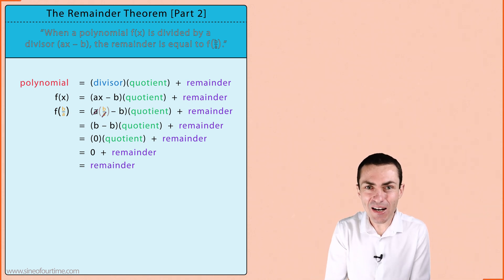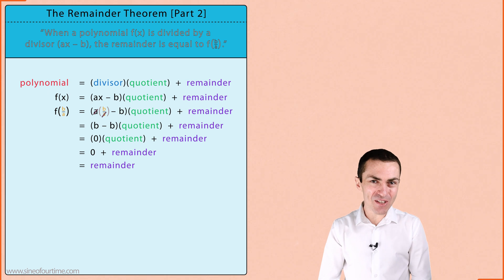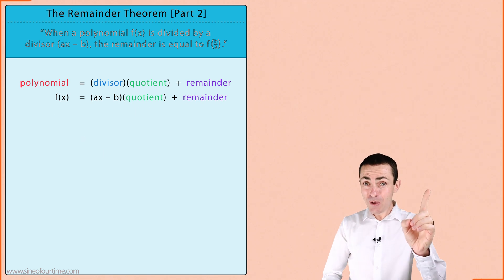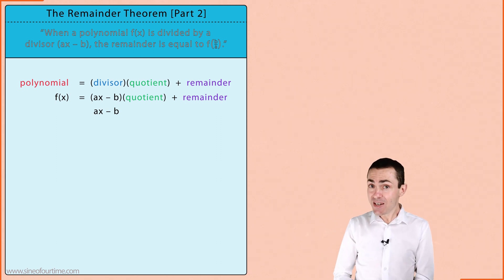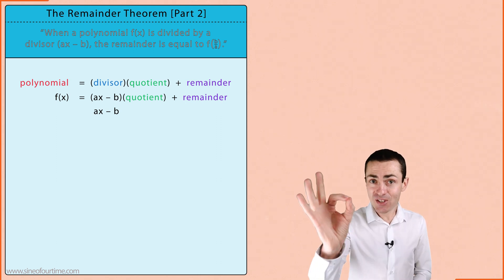Okay let me make this really easy for us to understand. If we want the remainder all we have to do is substitute the value of x that makes the divisor equal to zero.